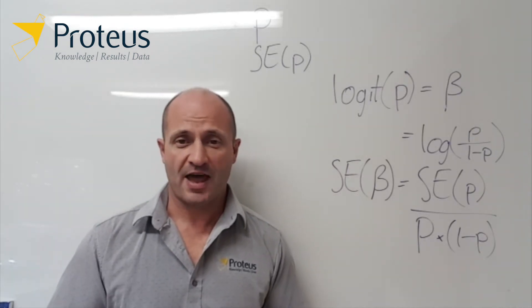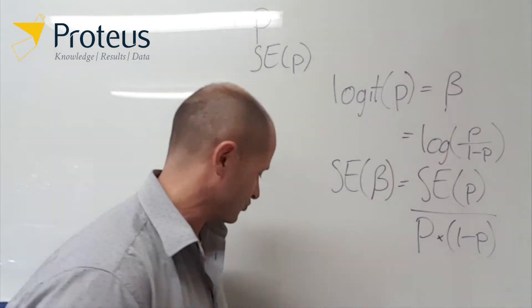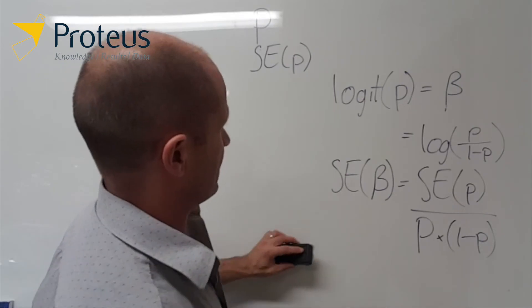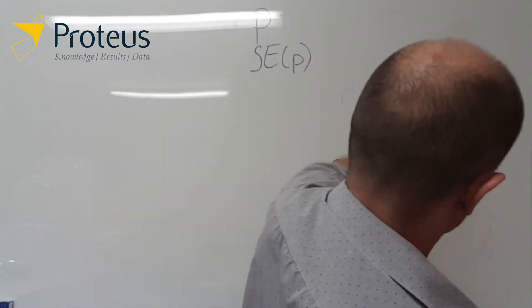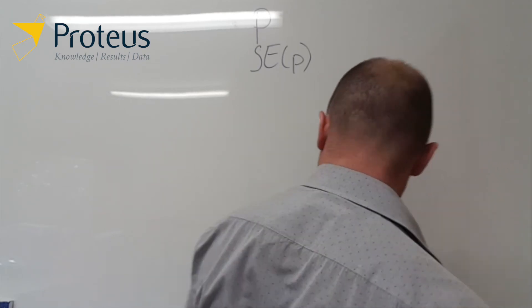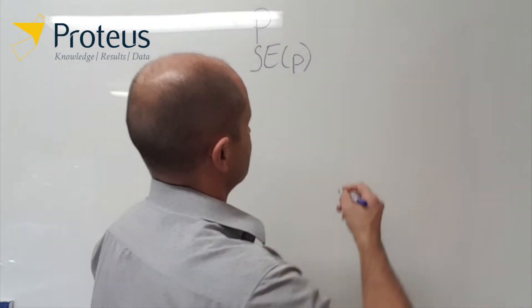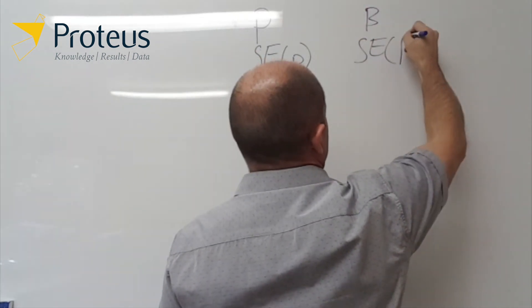Now, of course, if we want to go the other way, if we start with the values on the logit scale, we just reverse everything. So if we go back the other way, if we start with the values on the logit scale, this time we're starting with the values for beta and the standard error for beta.